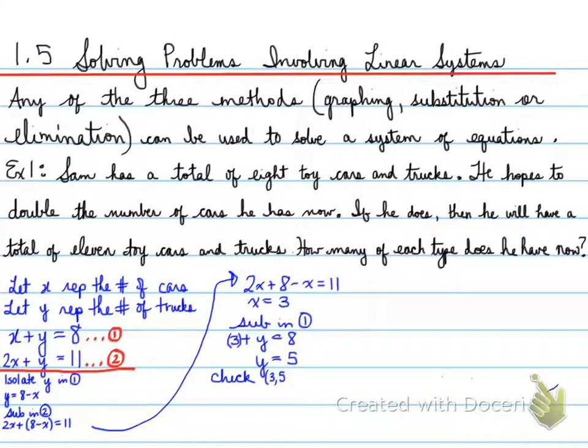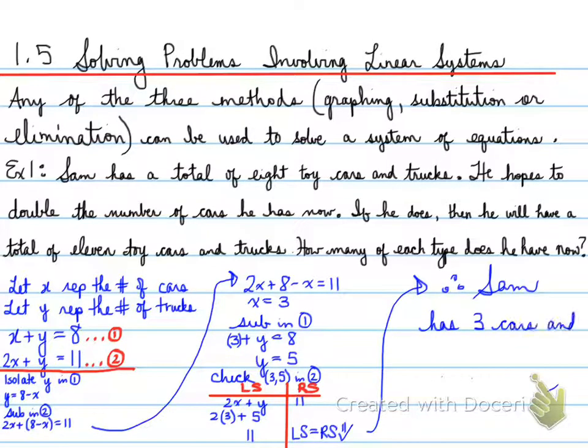And then now we're going to check. We check the answer 3, 5 in equation number 2, left side, right side, and this is what we get. Therefore, Sam has 3 cars and 5 trucks. Now, the reason you know is look at the question. He has a total of 8 cars and toy trucks right now. He hopes to double the number of cars he has now. So he wants to double it, but he hasn't done it yet. He has now 8 cars and trucks all together - 3 of them cars, 5 of them trucks.